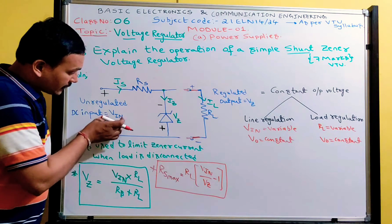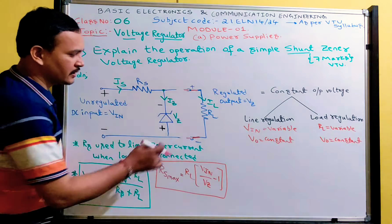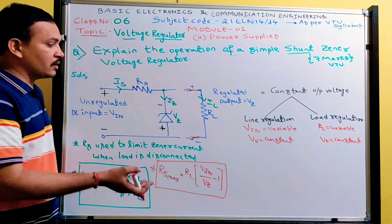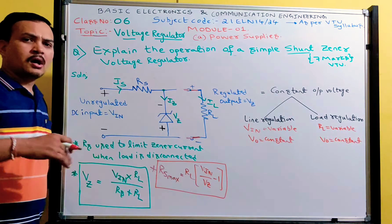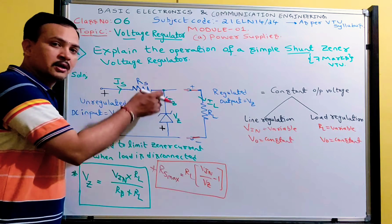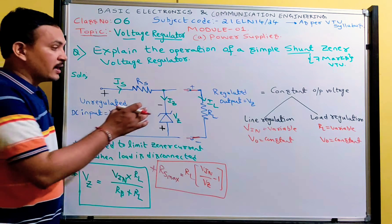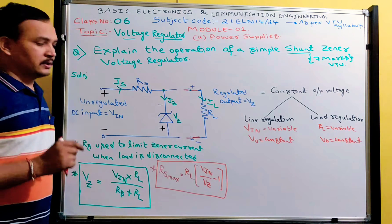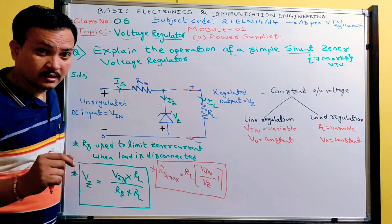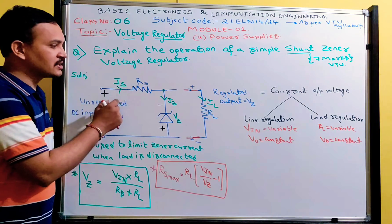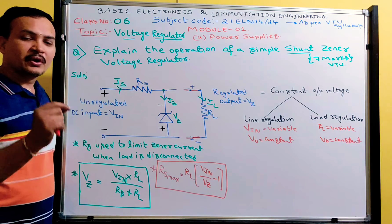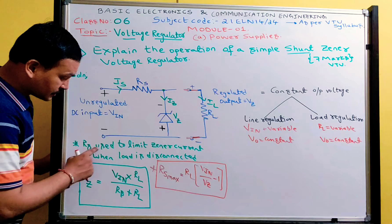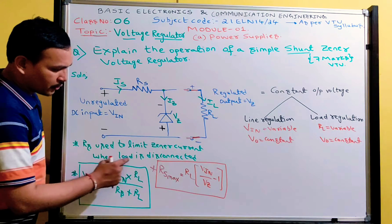When the load is not connected and the input voltage is just greater than the zener voltage VZ, breakdown occurs in the zener diode. Then a large excess zener current flows in the diode. Whenever this current reaches its maximum value, the diode will get damaged. In order to protect the zener diode from high current, we use a resistor RS in series with the zener diode. This RS value limits the zener current when the load is disconnected. That is an important point: RS is used to limit zener current when the load is disconnected.